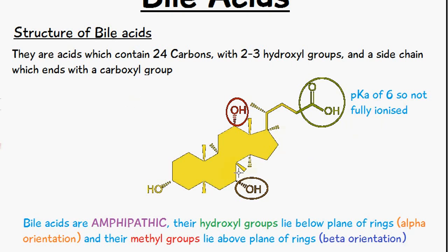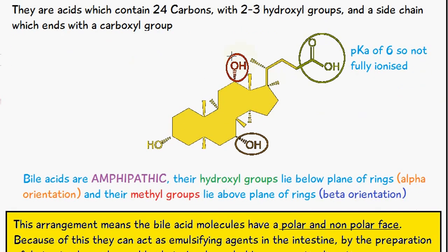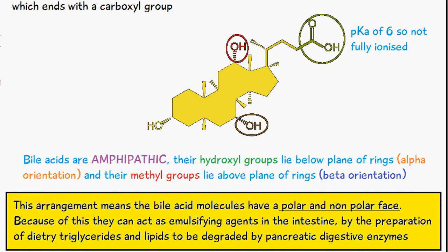This is an example of cholic acid which is a bile acid. We have three hydroxyl groups here and a side chain which ends in a carboxyl group. This is the basic requirement of a bile acid.